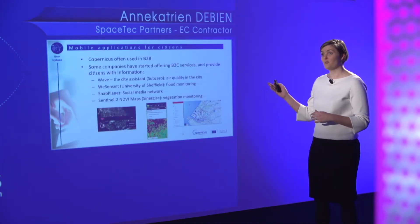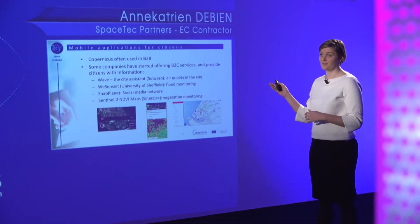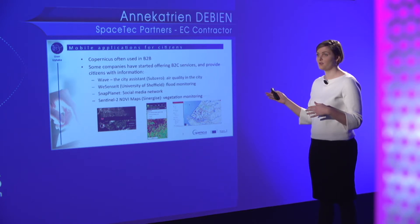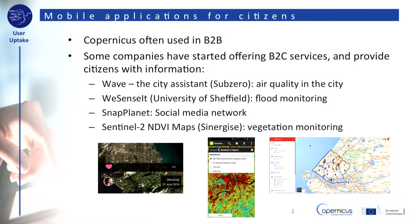These are some examples of mobile apps for citizens. One app uses air quality data from Copernicus, another one monitors floods. SnapPlanet developed a social media network with Copernicus data, and you can also monitor vegetation from your smartphone with another app. All of these apps have in common that Copernicus data are presented to you at the touch of a screen without needing any knowledge on Earth Observation.